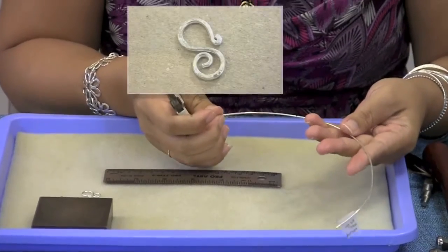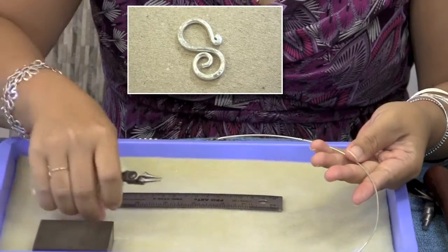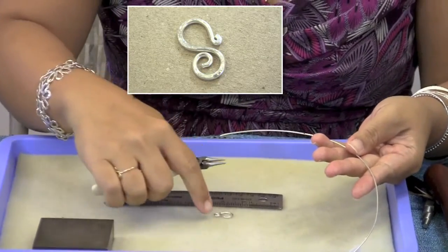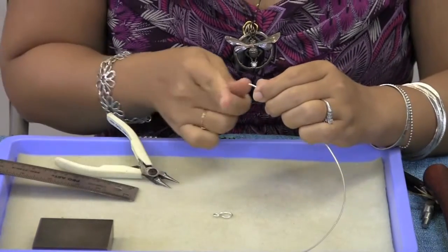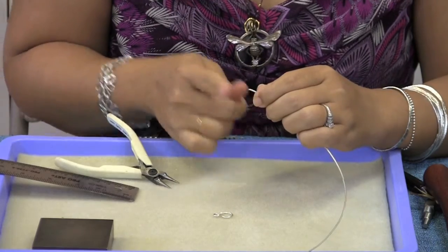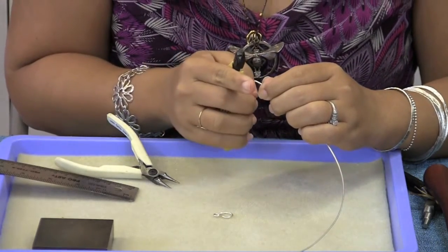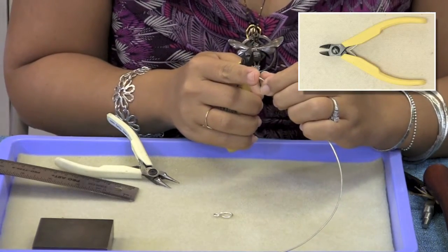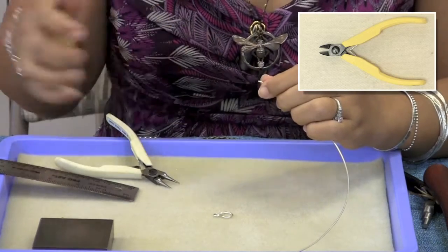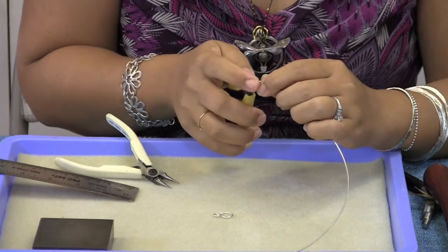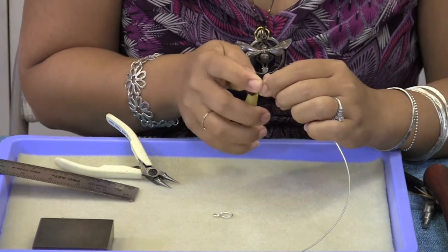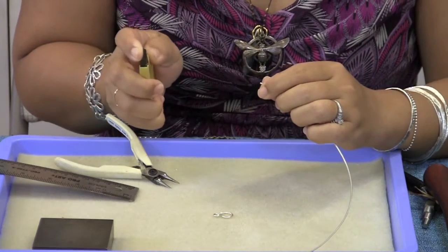For the first step in making your spiral hook clasp we are going to start with the spiral. You want to be sure that the end of your wire is flush cut meaning that it's cut flat on the end before you get started. If it's not already trimmed then trim it down so that is nice and flat.